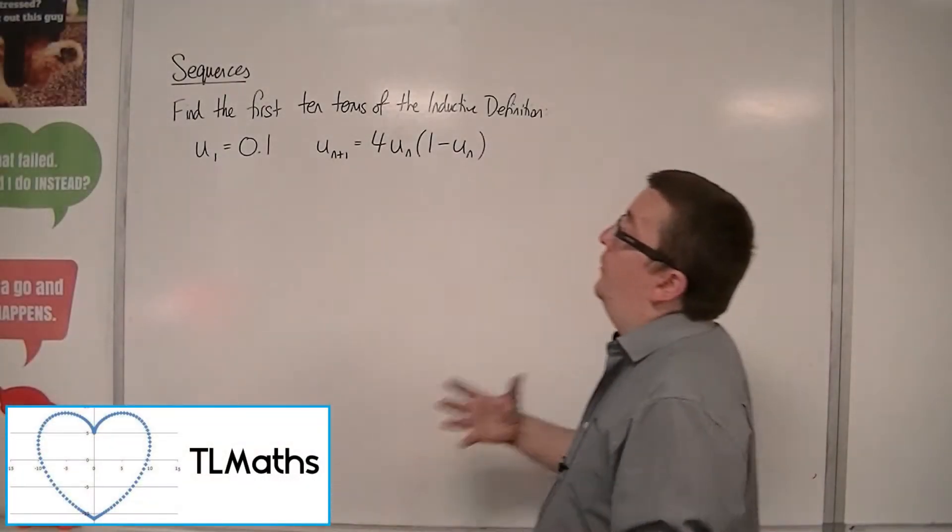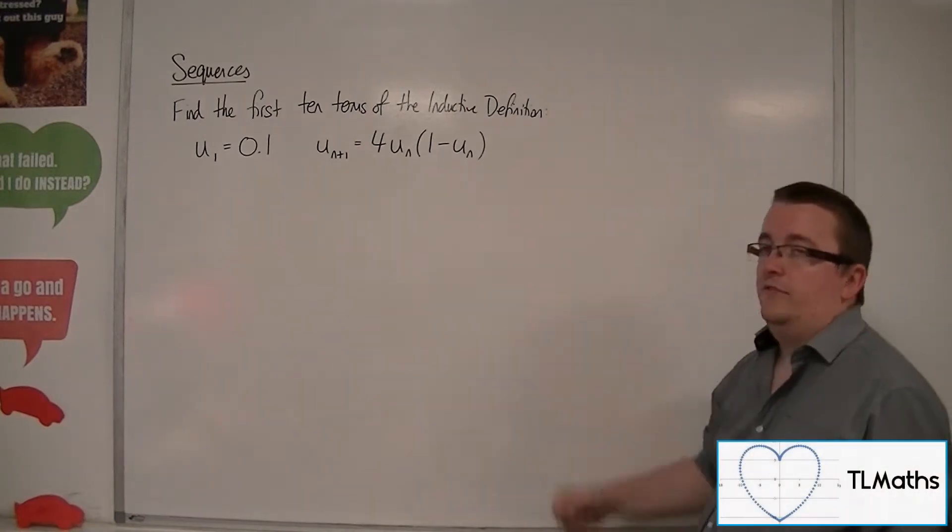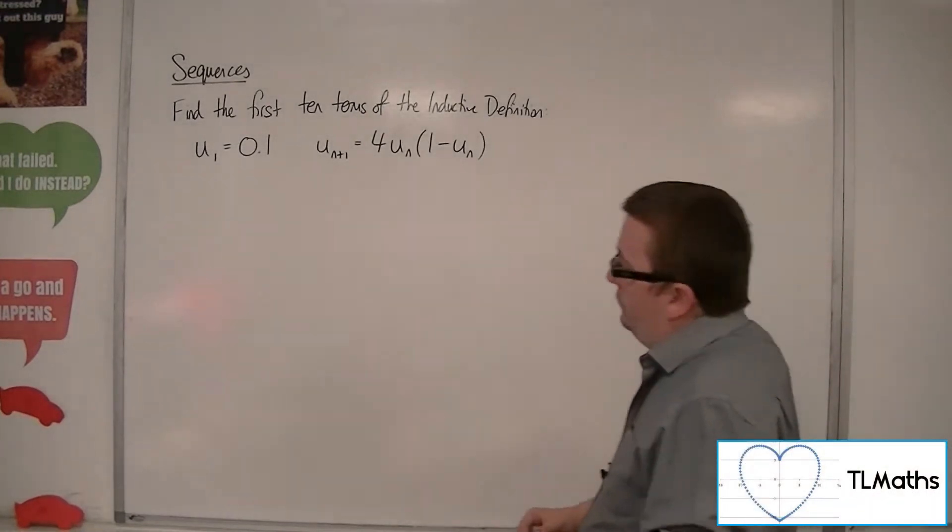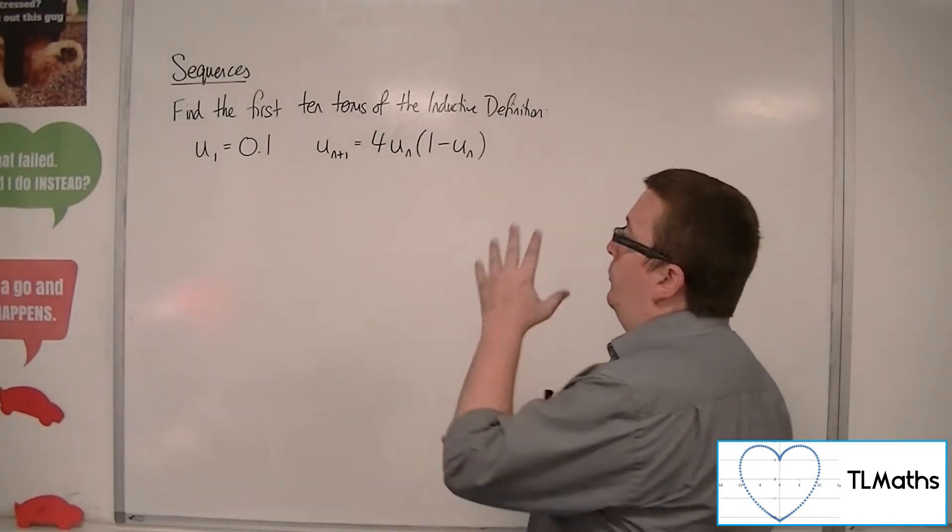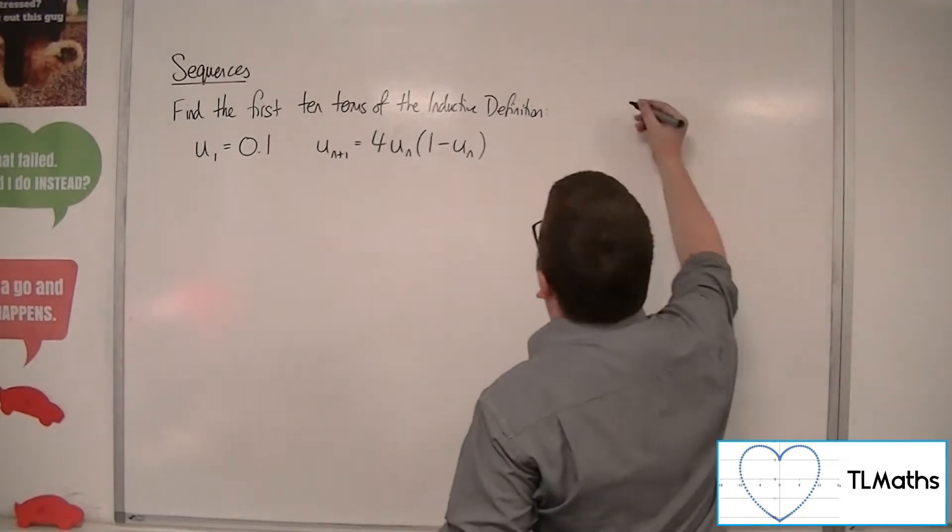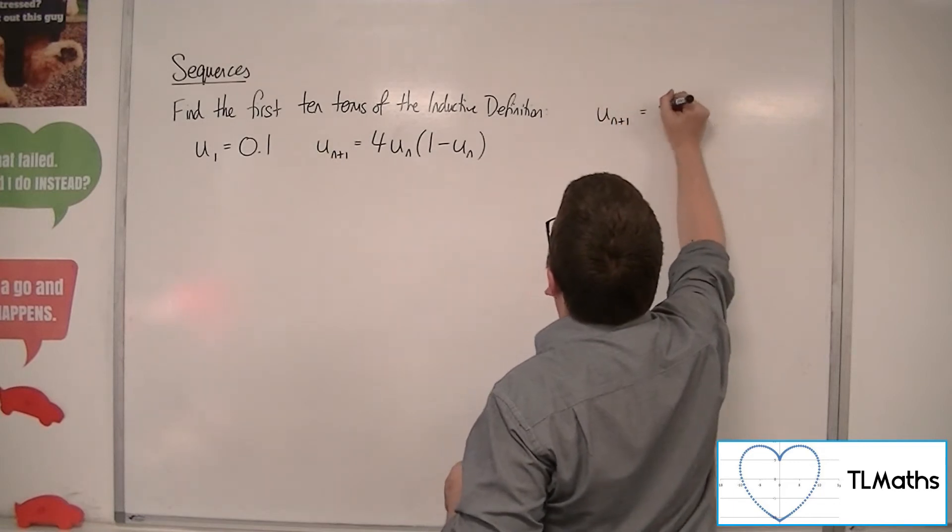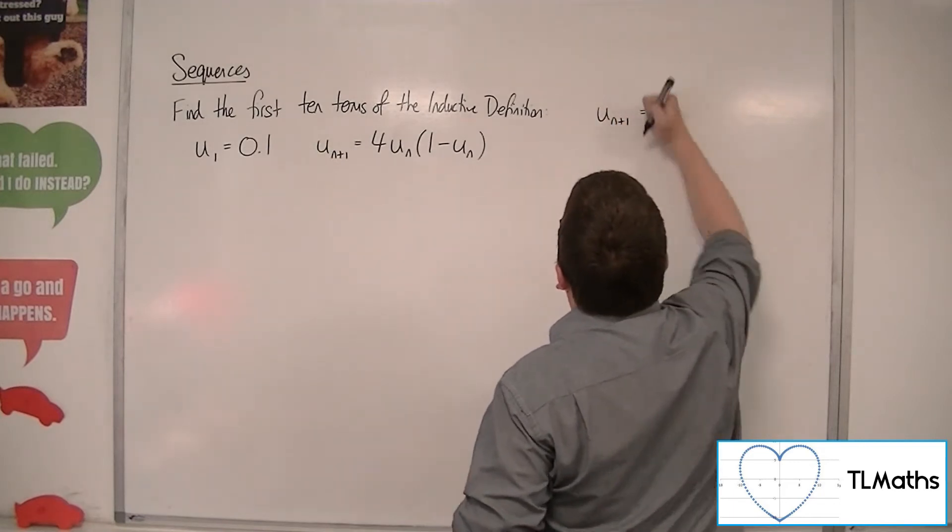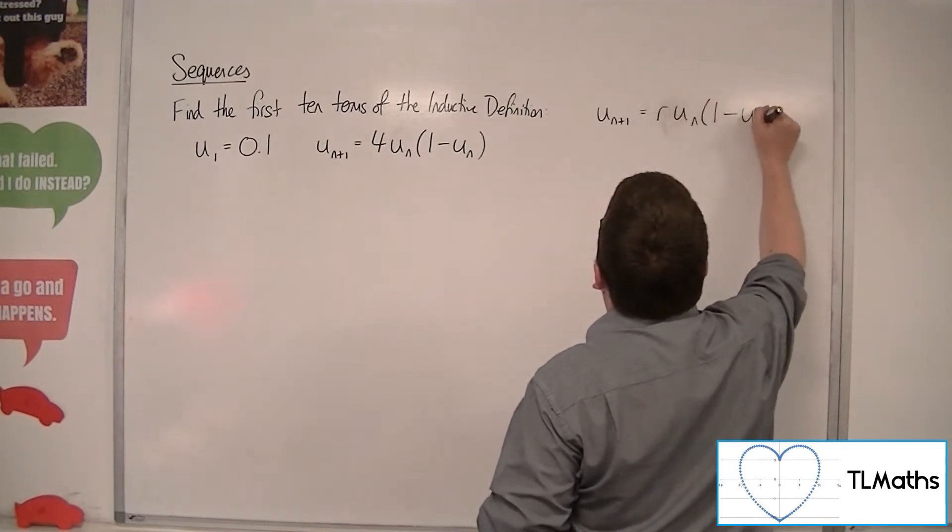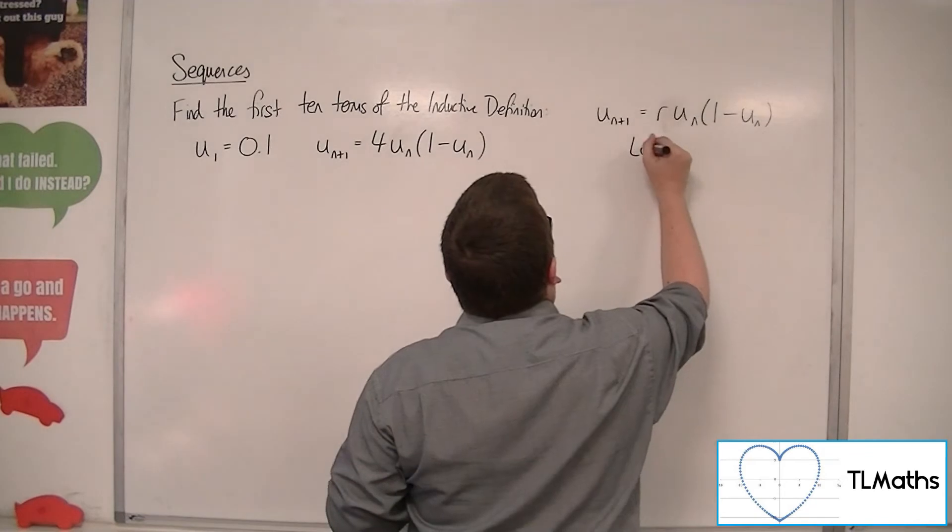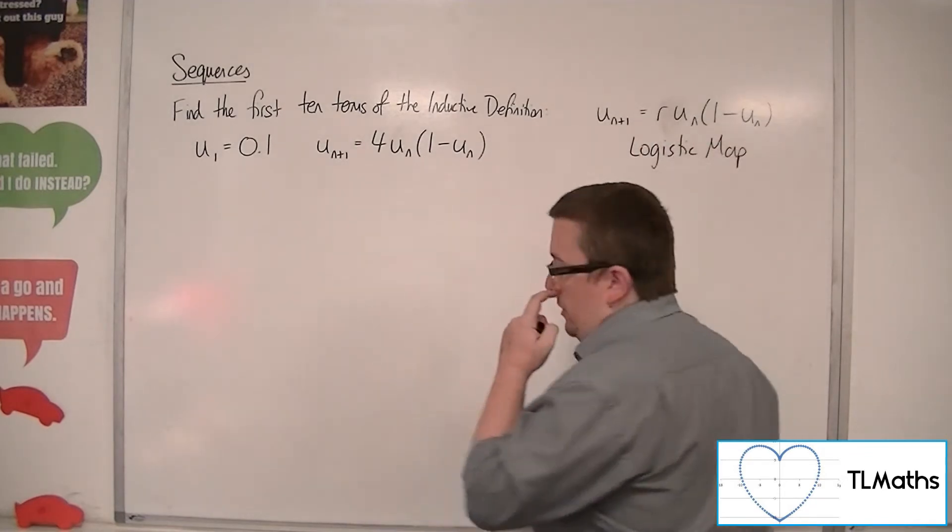So let's say I wanted to find the first 10 terms of this inductive definition. Now, for extra information here, I've specifically chose an example of a special recurrence relation known as the logistic map. So this is something you can look up if you're interested.